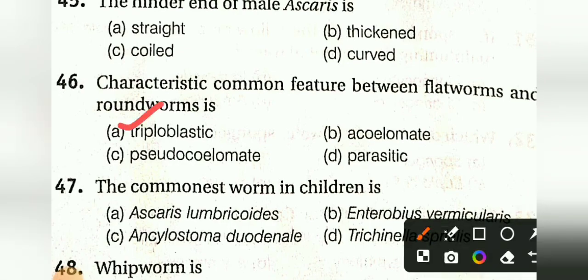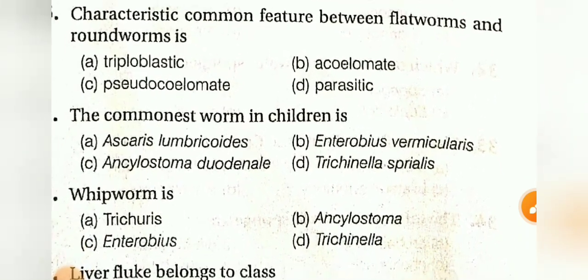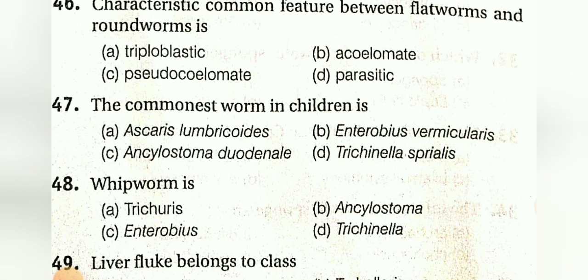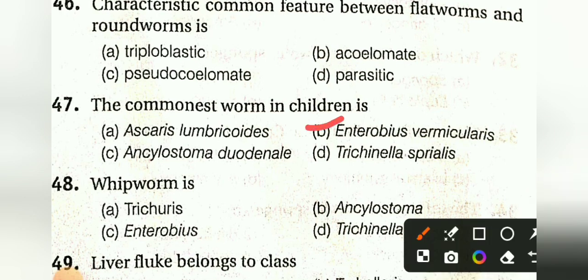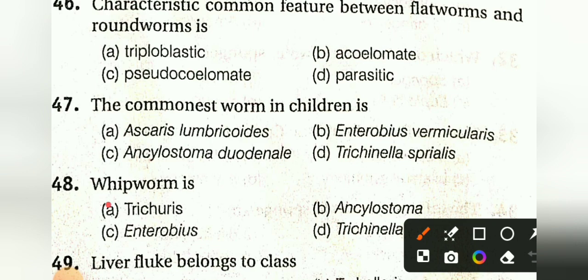The commonest worm in children is: Ascaris lumbricoides, Enterobius vermicularis, Ancylostoma duodenale, or Trichinella spiralis. The answer is B, Enterobius vermicularis.